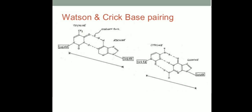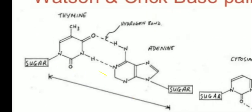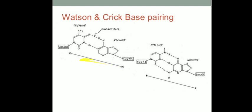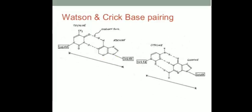Here you can see the Watson and Crick base pairing. A thymine group is joined to adenine with the help of a double hydrogen bond — these are the hydrogen bonds which help the binding of thymine to adenine. Similarly, cytosine is joined to guanine with the help of three hydrogen bonds. These are the three hydrogen bonds with the help of which the bases are joined to each other in each polynucleotide sequence.